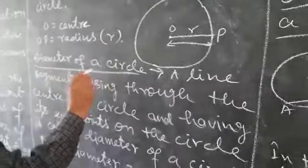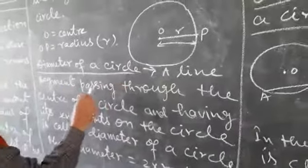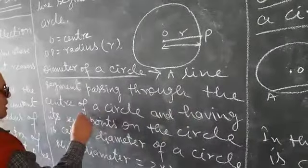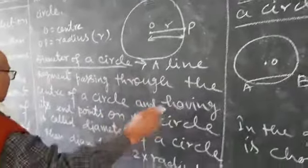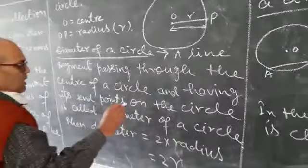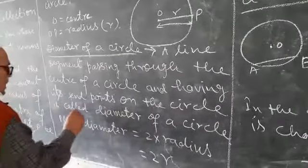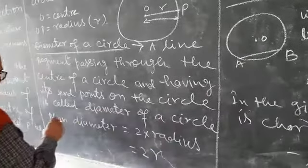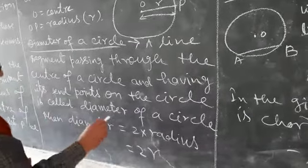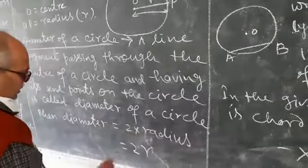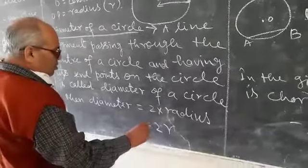Diameter of a circle. A line segment passing through the center of a circle and having its end points on the circle is called diameter of a circle. Therefore, the diameter is equal to 2 into radius. Therefore, it will be equal to 2R.